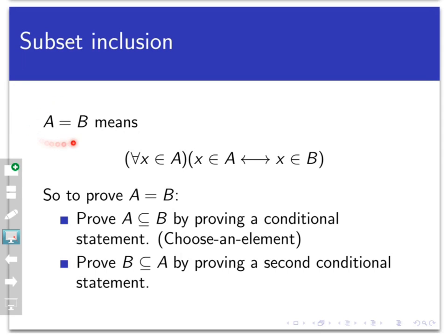To say that A equals B when A and B are sets means that for every X, X is in A if and only if X is in B. So to prove that A equals B, this is going to involve proving a biconditional statement, which involves proving two conditional statements.